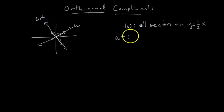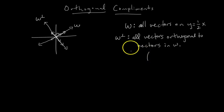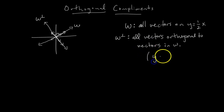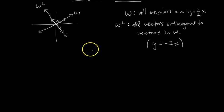W perp is all vectors orthogonal to the vectors in W. If you remember from high school algebra, the slope of W perp is the opposite reciprocal of the slope of W, so W perp is the line y equals negative 2x.